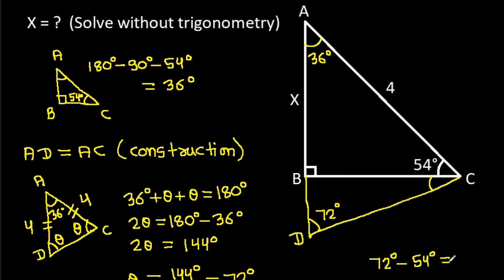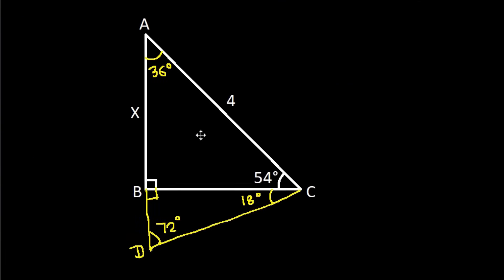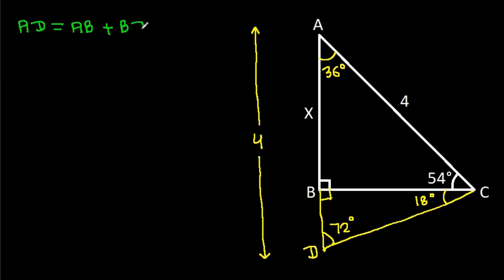Minus 54 degrees gives 18 degrees. This angle will be 90 degrees. We have AD is 4, and AD equals AB plus BD. So 4 equals X plus BD, and BD will be 4 minus X.